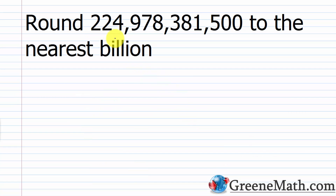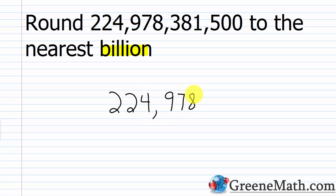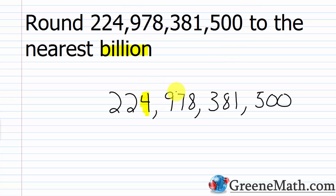Now we want to round 224,978,381,500 to the nearest billion. Let's rewrite this number: 224,978,381,500. The billions place is right here, and we want to look at the digit that follows it — that's going to be this 9. The 9 falls in the category of 5 or greater, so we add 1 to the digit in the roundoff place.